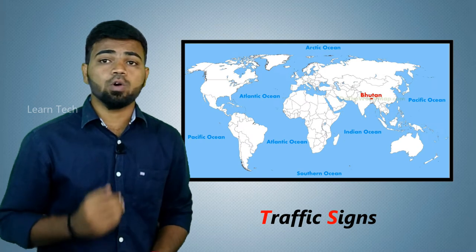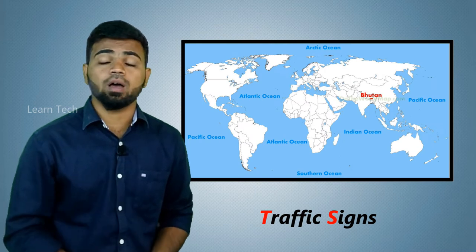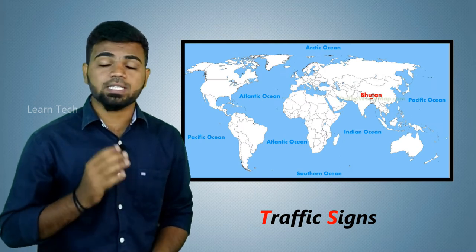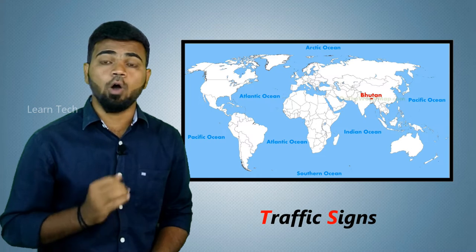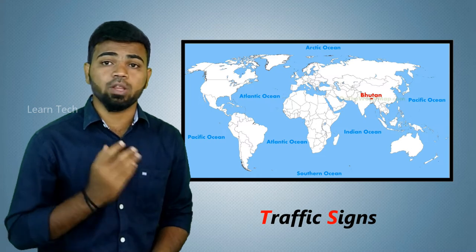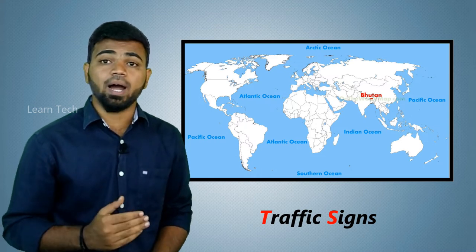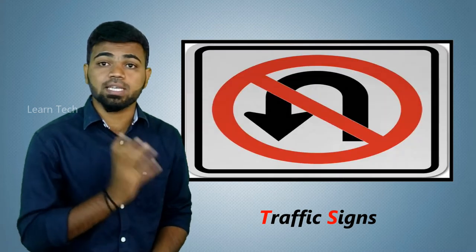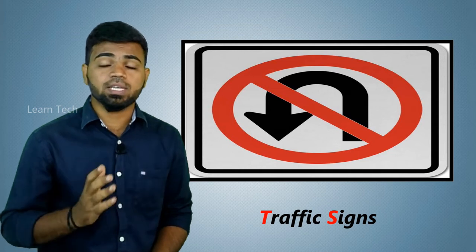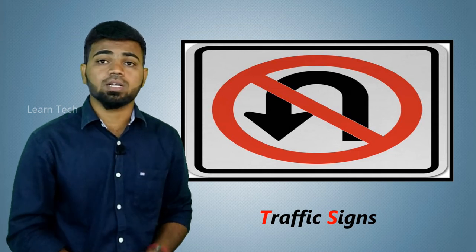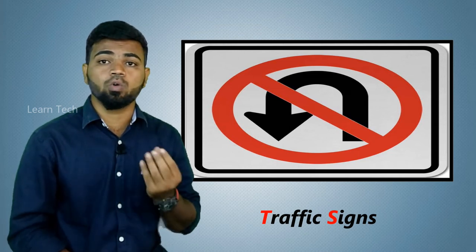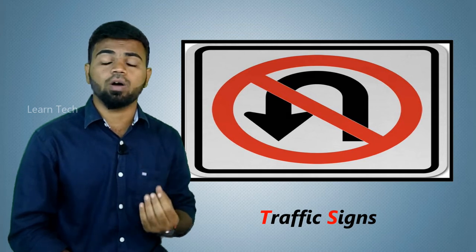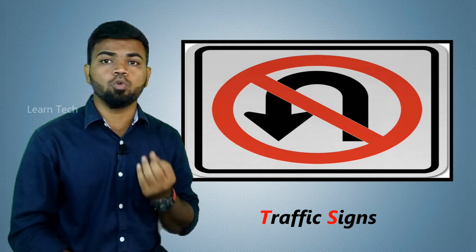Now you can see some facts about traffic signals. In the past, there were no traffic signals. There is no traffic science. In the traffic sign system, there is a green code and a blue code. The three types of signs must be noted.